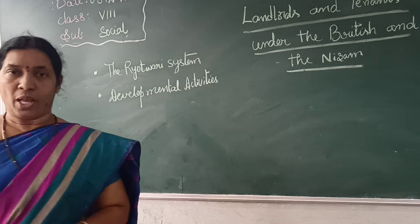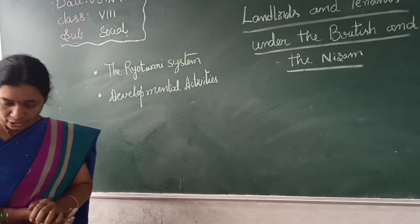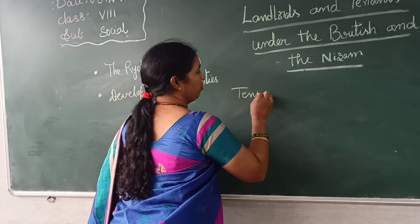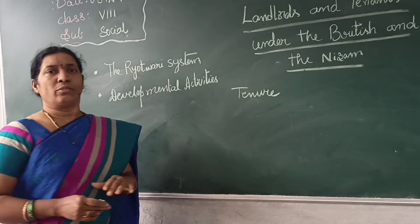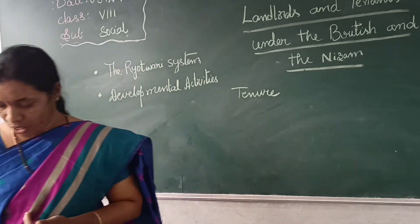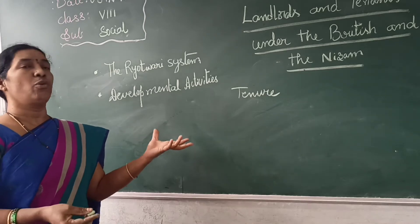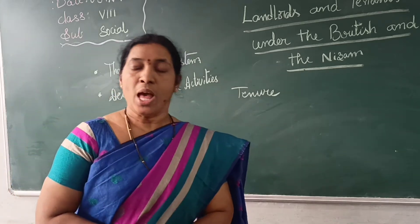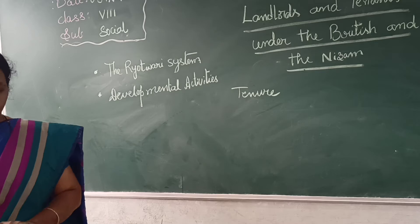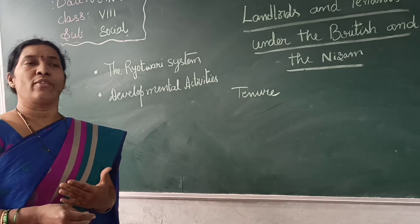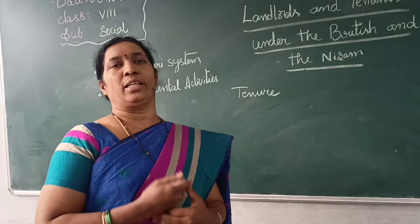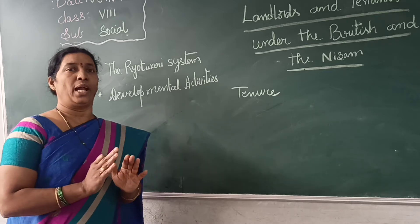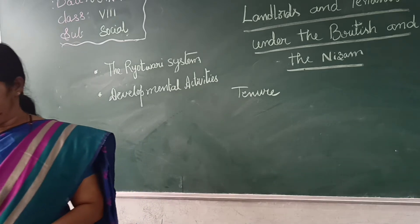What is the Raithwari system? Raith means cultivator. Raithwari means peasant's tenure. So how to give peasant's tenure? It was decided to collect revenue from the peasants. The British company decided to give land to whoever was cultivating the lands — the owners and cultivators — and they are simply giving a fixed rent.